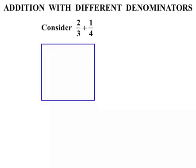In this lesson on fractions, we are going to look at addition with different denominators. Let's consider two thirds plus one quarter. The three and the four on the bottom are the denominators — they are different. So let's do a diagram firstly.